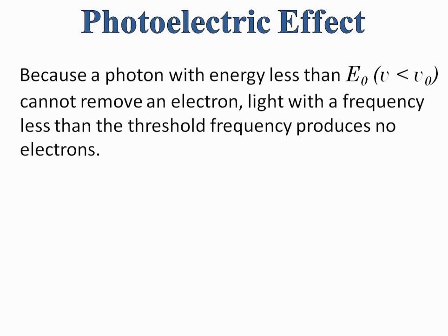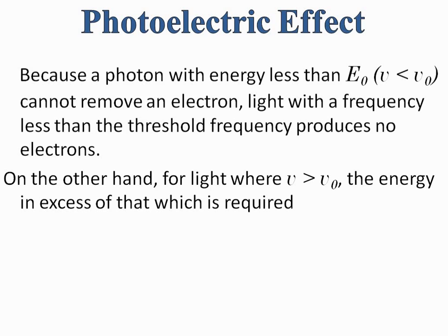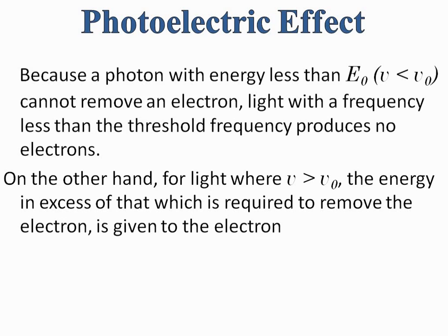A photon with energy less than E naught has frequency less than nu naught, and hence light which possesses photons with frequency less than the threshold frequency produces no electrons from the metal surface. On the other hand, for light where nu is greater than nu naught, the energy in excess of that required to remove the electrons is given to the electrons as kinetic energy.